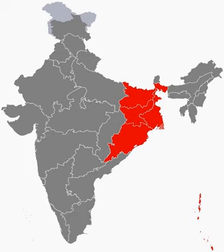Rabindra Sangeet, also known as Tagore songs, are songs written and composed by Rabindranath Tagore. They have distinctive characteristics in the music of Bengal and are popular in India and Bangladesh. Tagore wrote some 2,230 songs. Writing in Bengali, he created a library of over 2,000 songs whose form is primarily influenced by Hindustani classical, subclassical, Carnatic, Western, Baul, Bhatiali and different folk songs of India. Many singers in West Bengal and Bangladesh base their entire careers on Tagore's musical masterpieces. The National Anthems of both India and Bangladesh are Rabindra Sangeet.